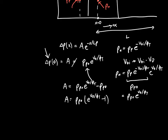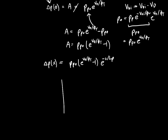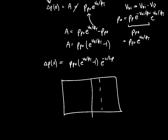Putting it all together, the total excess hole concentration as a function of x is delta P(x) equals PP naught times (e to the V_d over phi_T minus one) times e to the minus x over L_P. This is the hole concentration profile within the N region. Drawn graphically, after the edge of the depletion region the hole concentration falls off exponentially and approaches the equilibrium hole concentration PP naught.